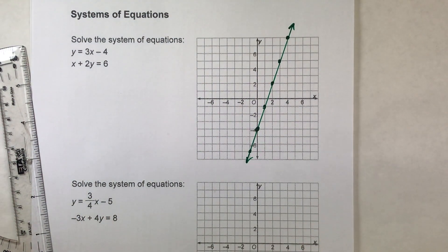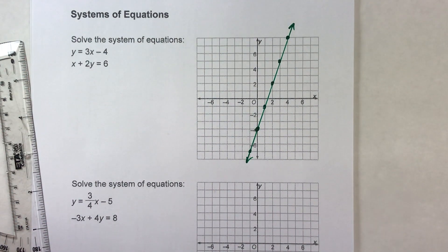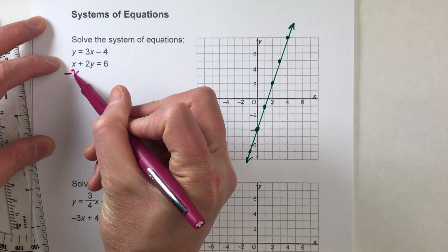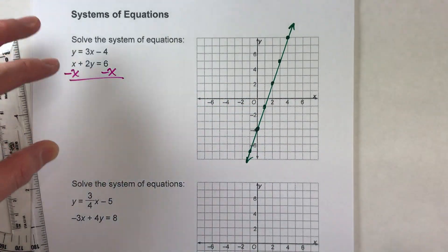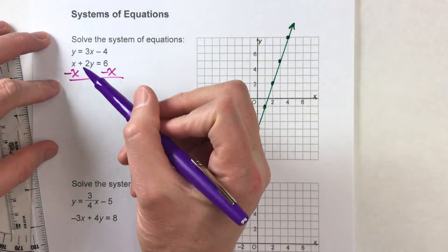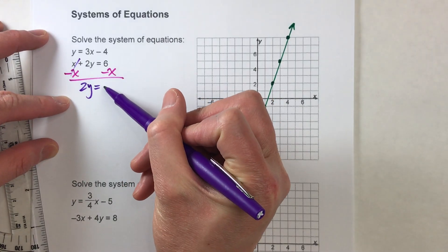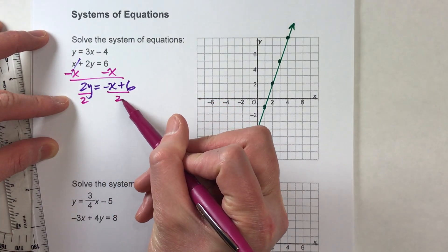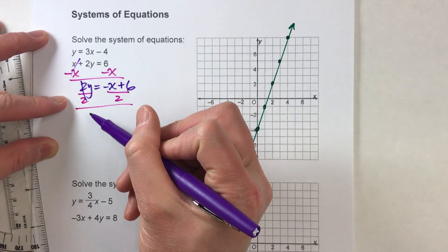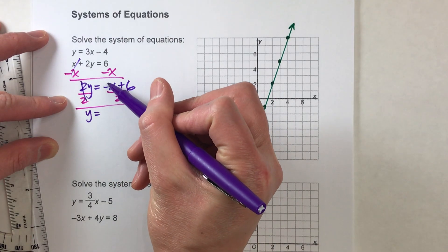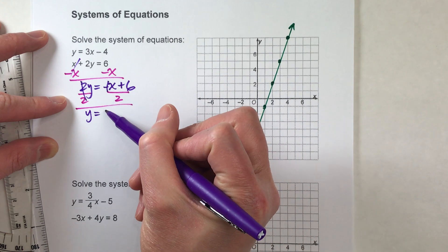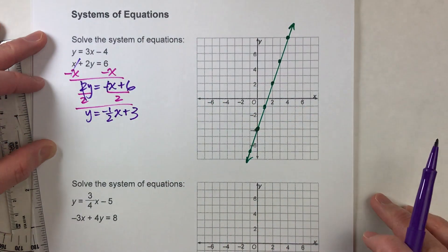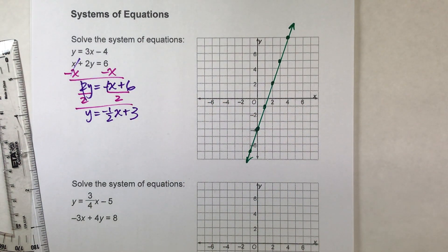Now for my second line, notice that this is in standard form, so I'm going to need to get it into slope-intercept form in order to graph it. I need to get y by itself. I'm going to subtract x on both sides. When I do that, I get 2y equals negative x plus 6. Now I have to divide both sides by 2. I end up getting y equals negative one-half x plus 3.